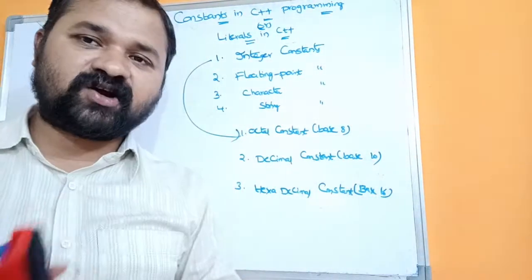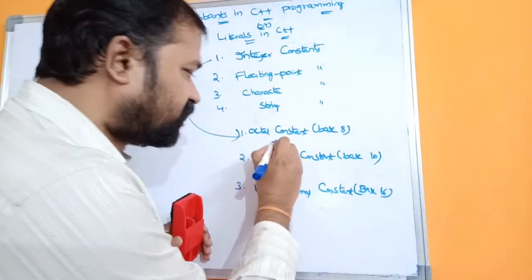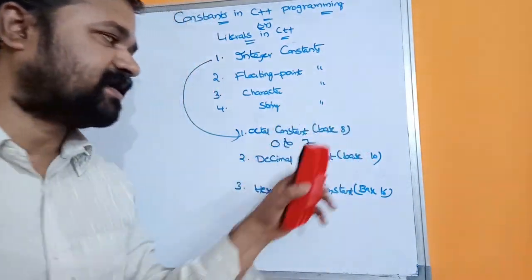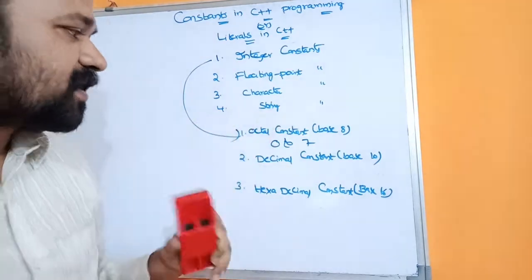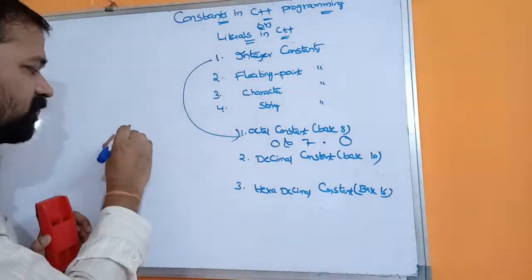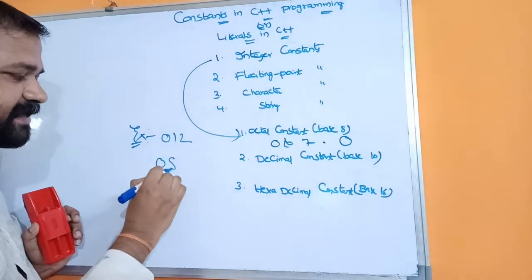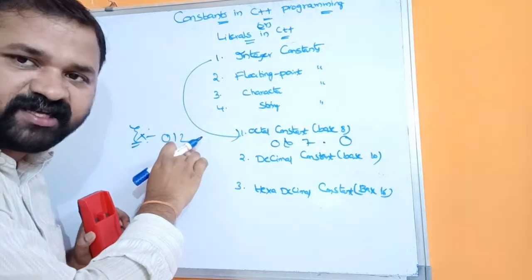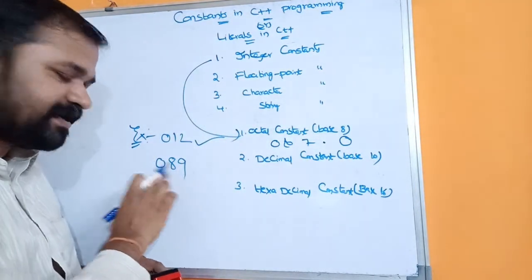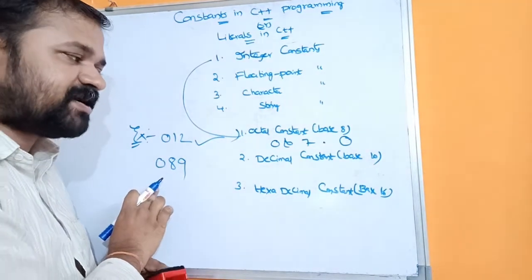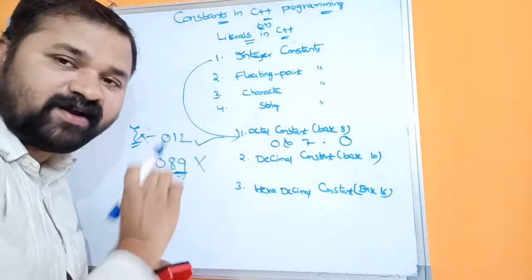Let us see what an octal constant is. The name itself specifies the meaning — octal constant contains a combination of digits from 0 to 7, and it always begins with 0. For example, 0205 is an octal constant. However, 089 is not a valid octal constant because it contains 8 and 9, which are outside the 0–7 range.